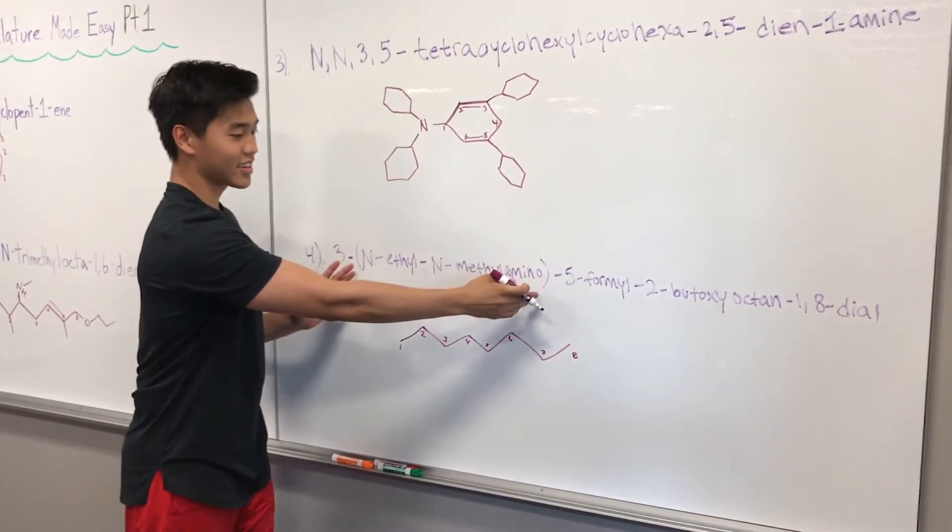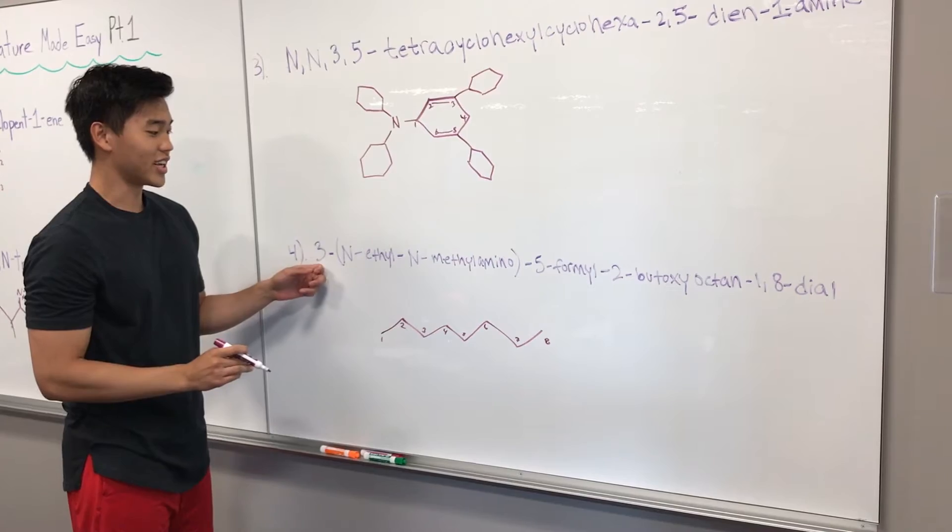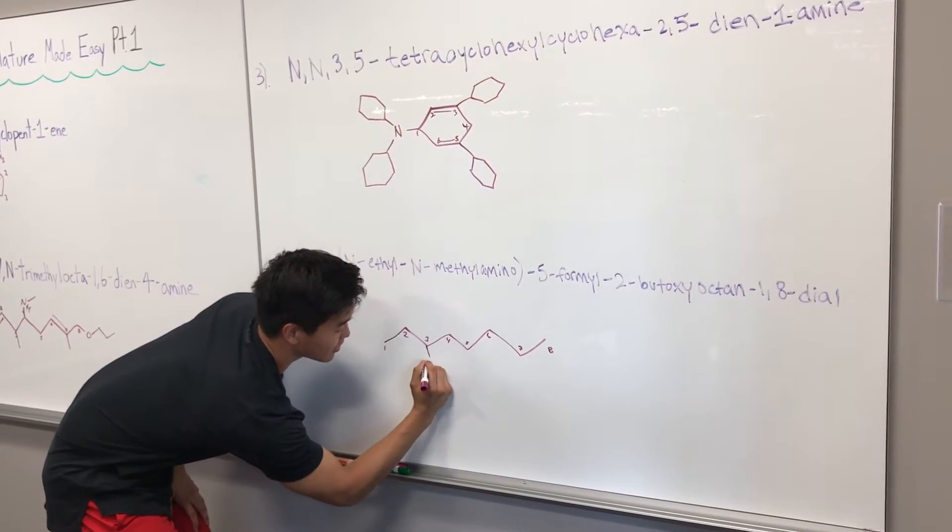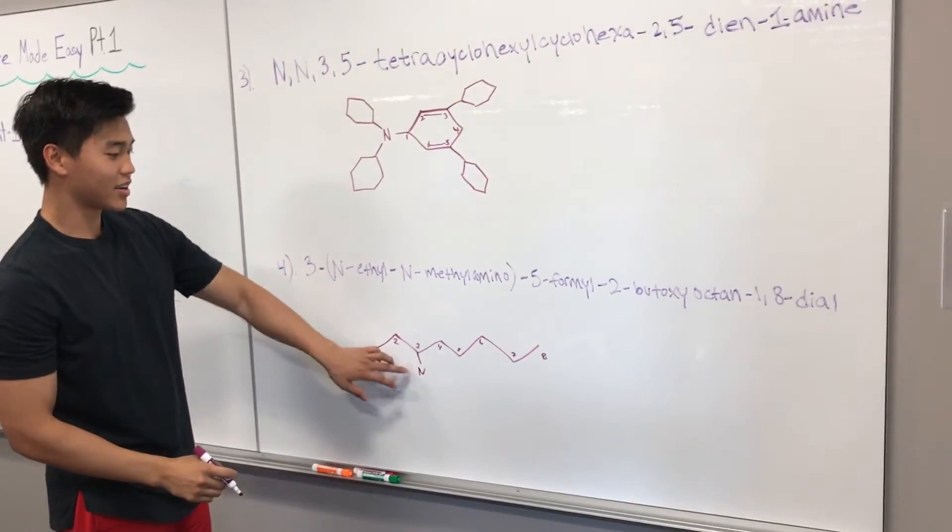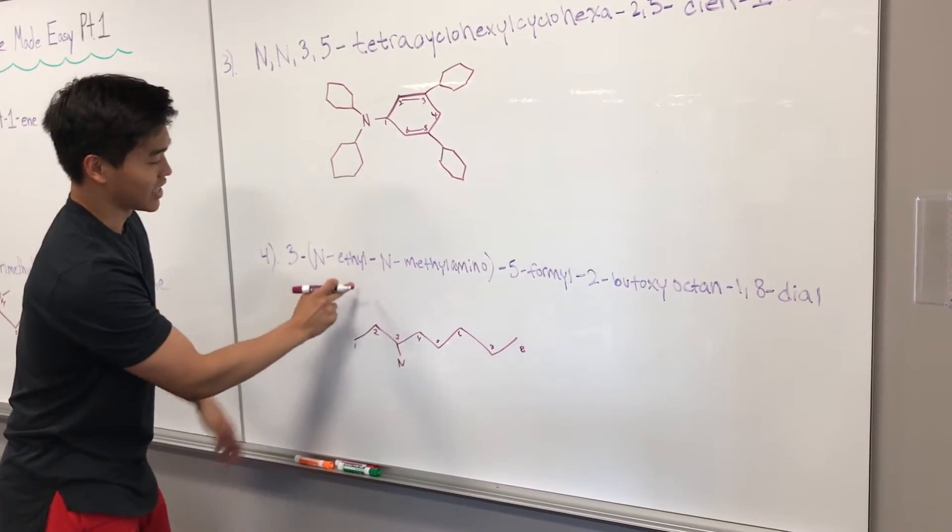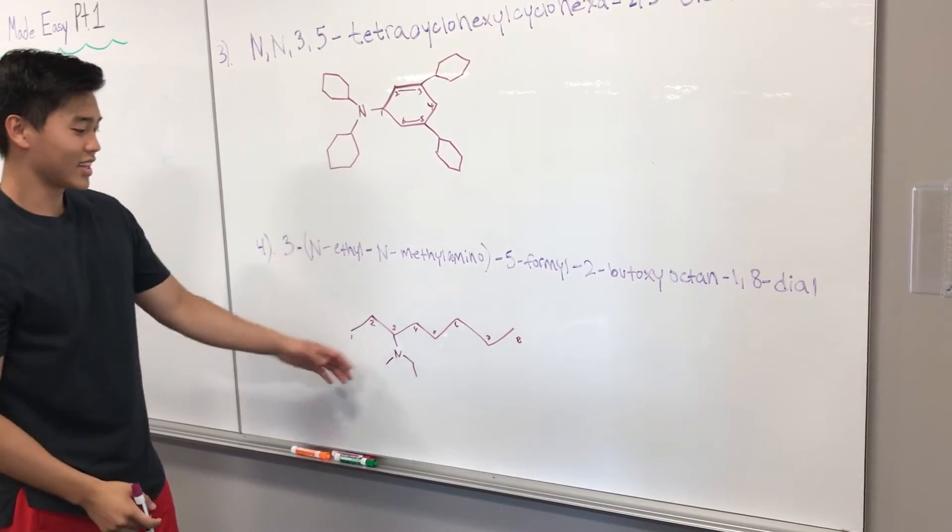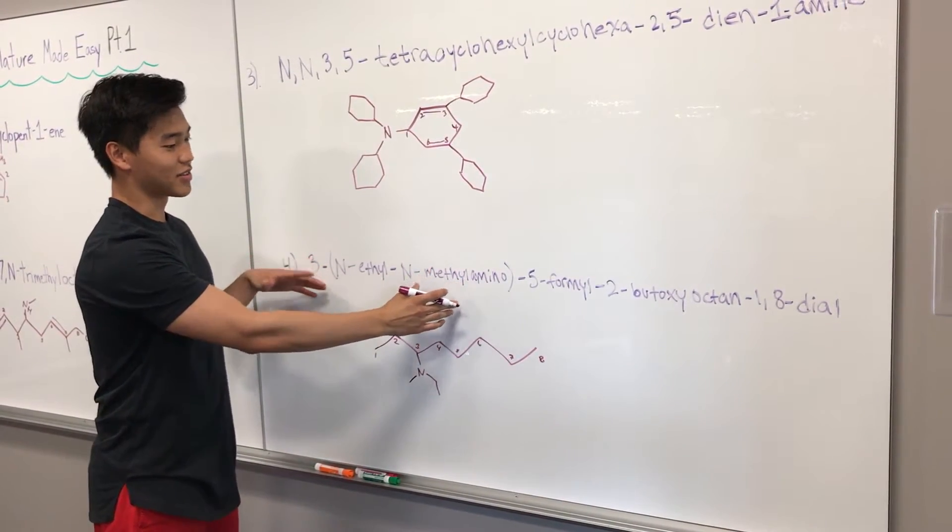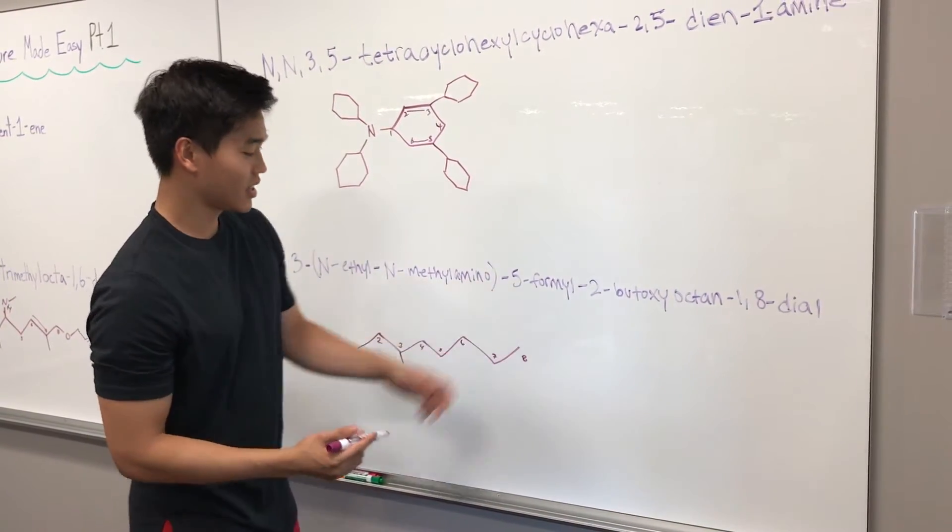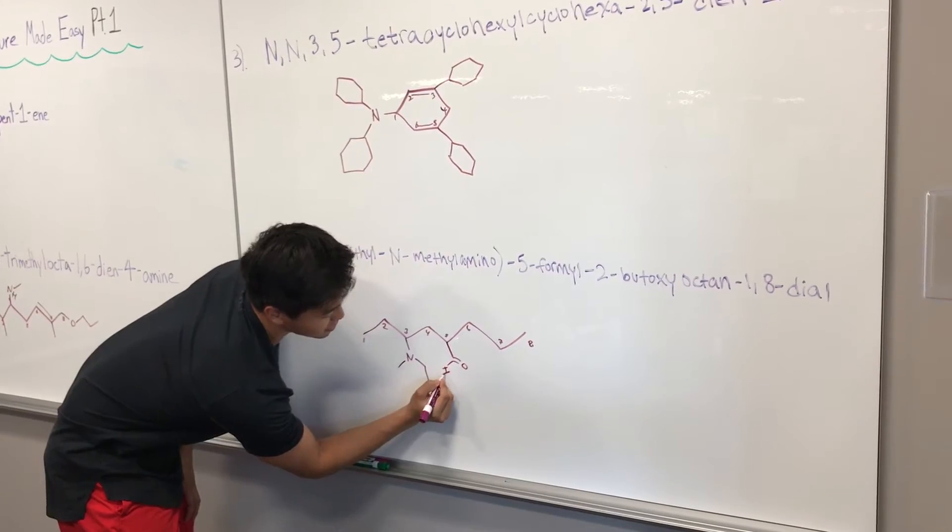And then looking at this parentheses here, this is all going to refer to carbon number three. And so we have the parentheses. It's always going to refer to the thing in front of it. So we know three has to have the N-ethyl-N-methylamino. And so we'll start with the amino group off carbon three, which is our N. And from here, we can see that we have two Ns, which means there's going to be two branches, ethyl and methyl, off of our original nitrogen. And so I'll draw in the ethyl first. And then our methyl group is right there. And so this whole part, while it looks kind of difficult, it's really this simple.